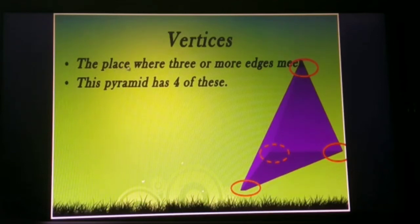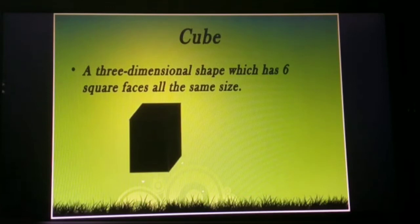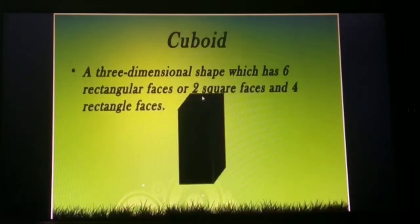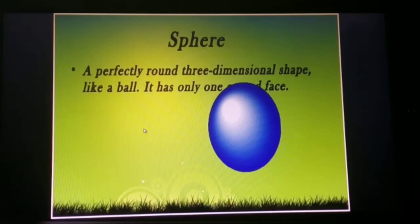A vertex is the place where three or more edges meet. This pyramid has four vertices. Now a cube is a three-dimensional shape which has six square faces, all the same size. A cuboid is a three-dimensional shape with six rectangular faces — two square faces and four rectangular faces. A sphere is a perfectly round three-dimensional shape like a ball, with only one round face.